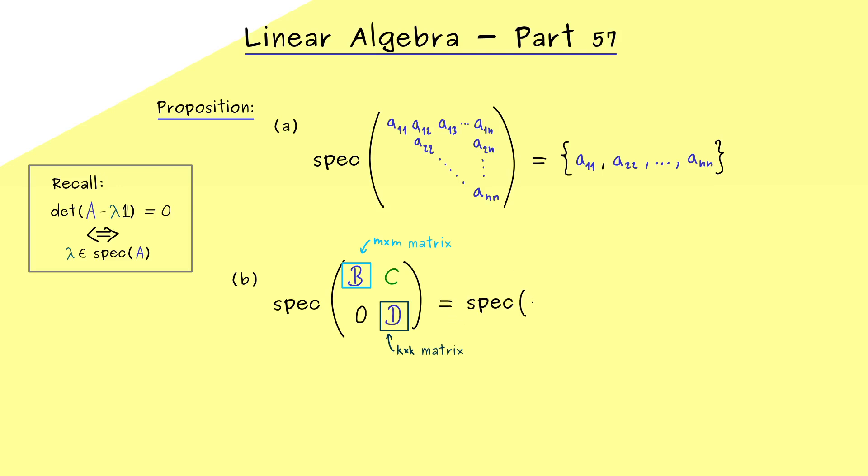Because now we say we calculate the spectrum of B and the spectrum of D and then form the union. And then what we get is the spectrum of this block matrix there. Also this is not hard to see if you know the corresponding fact for determinants.